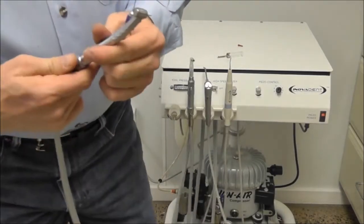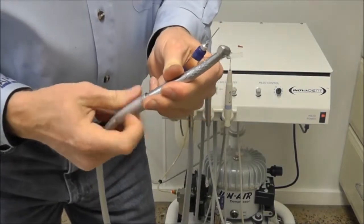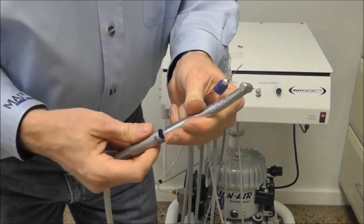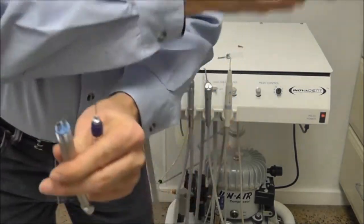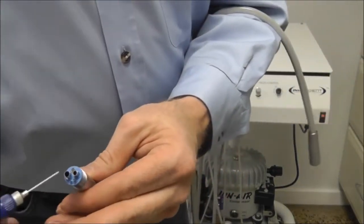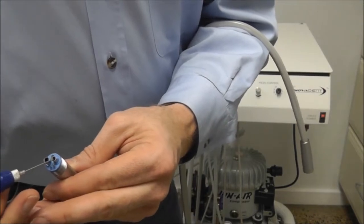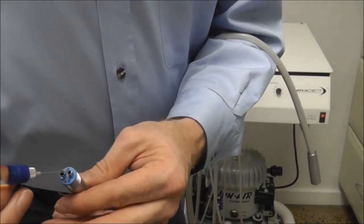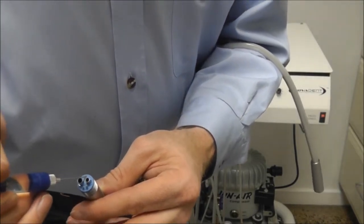We'll go ahead and oil our high and low speed hand pieces. Remove the high speed hand piece from the dental cart. We have two larger ports and we'll place the oil down the smaller of the two, giving it two or three drops.